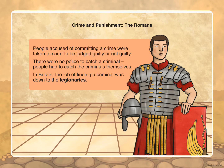In Roman times, people accused of committing a crime were taken to court to be judged guilty or not guilty. There were no police to catch criminals — people had to catch criminals themselves. In Britain, the job of finding a criminal was down to the legionaries. Think about the information you've just heard: is there anything that still happens today, and anything that's shocking because it doesn't happen today?